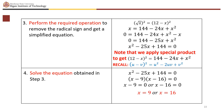Factoring x squared minus 25x plus 144 equals 0 gives (x minus 9)(x minus 16) equals 0, so x equals 9 or x equals 16. Verify both values in the original equation.